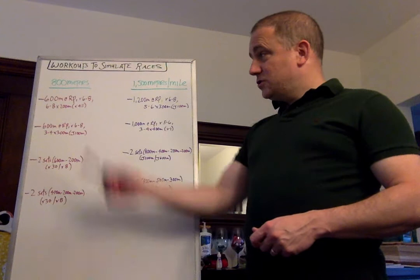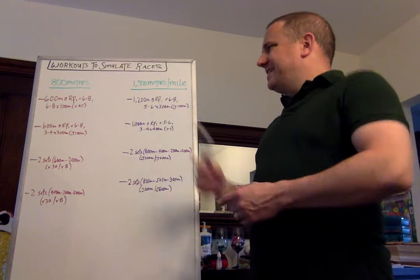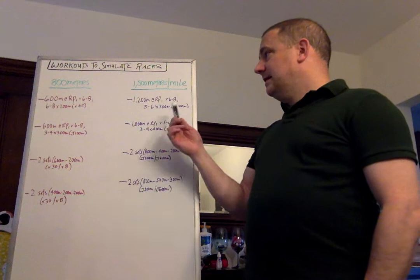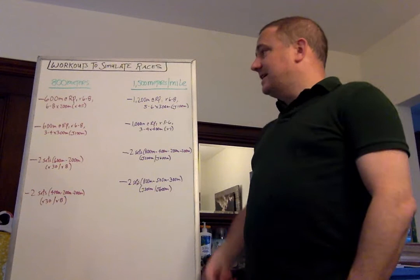Let's move over to the 1500 slash mile. First one, 1200 meter effort at race pace. So let's say the mile is, just use numbers, let's say five minutes, or it's 3:45 for the 1200 meters. If it's 4:20, 3:15 for the 1200 meters. And you take a six to eight minute active recovery.